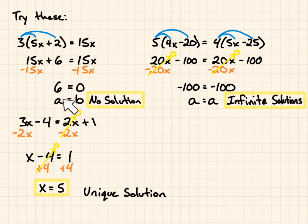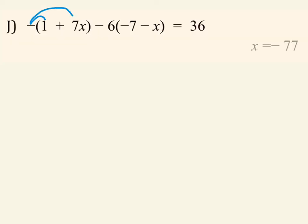For no solution, you have to show that you're getting a number equaling something different. And for infinite solutions, you need to show that you end up with the same thing on both sides.